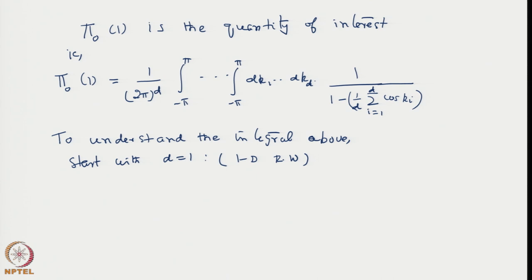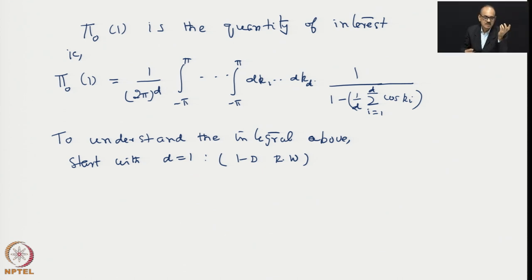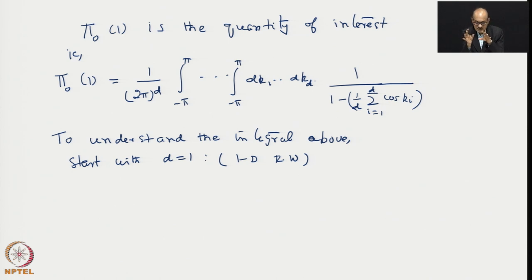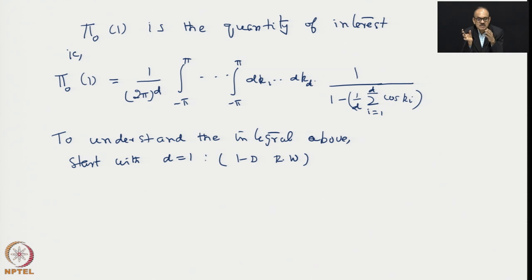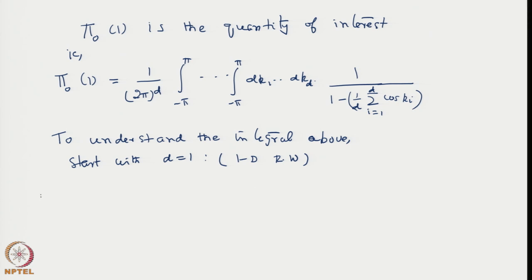In 1D random walk on an infinite real line with discrete lattice points, the random walker starts from the origin and we ask: what is the probability of ultimately returning to the origin? Does he return or does he totally escape? We have found answers in various ways before, but here we see this result specifically in the formalism we developed and in the light of results in general d dimensions.